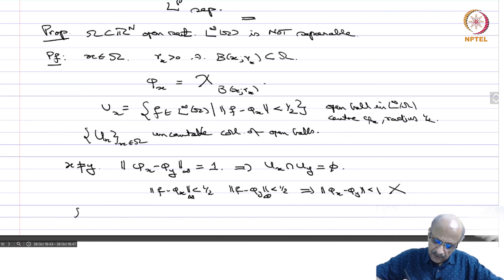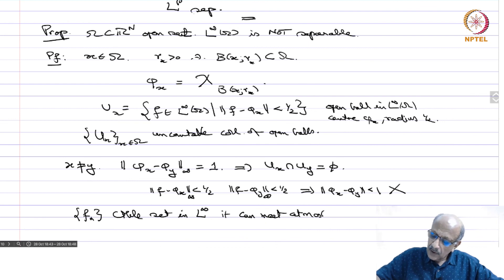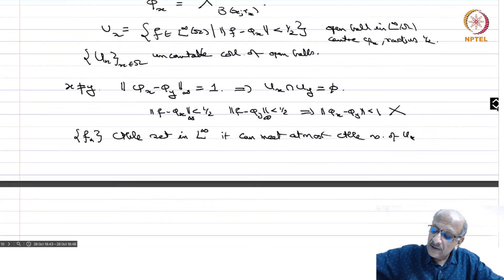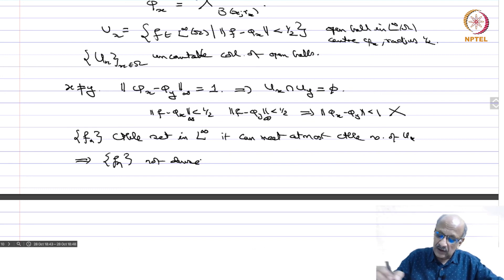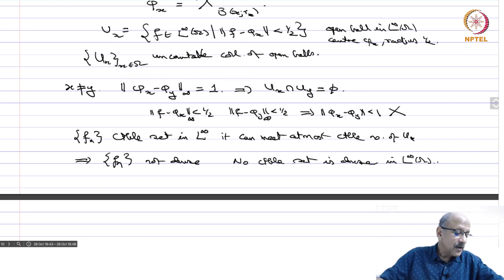This implies U(x) intersection U(y) is empty: if f belongs to both U(x) and U(y), then norm f minus phi_x is less than one half and norm f minus phi_y is less than one half. By the triangle inequality, norm phi_x minus phi_y would be strictly less than 1, which contradicts the fact that it equals 1. So if f_n is a countable set in L infinity, it can meet at most countably many U(x)'s. Therefore, f_n is not dense, no countable set is dense in L infinity, and L infinity cannot be separable.